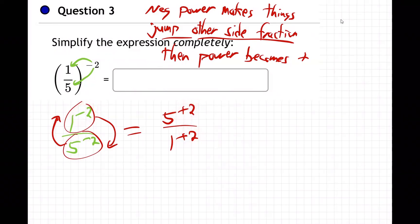So negative power is unhappy where it's at, jumps to the other side. And then what's 5 squared? It just means 5 times 5, and 1 squared just means 1 times 1. So that's 25 over 1. We don't leave 1s in the bottom because 25 divided by 1 is just 25. And so there we go.